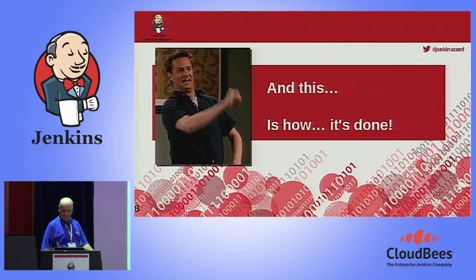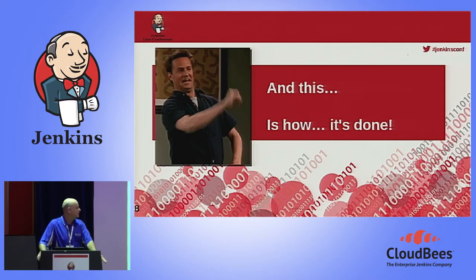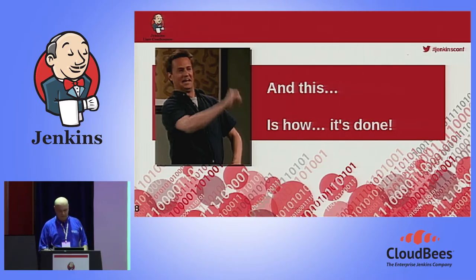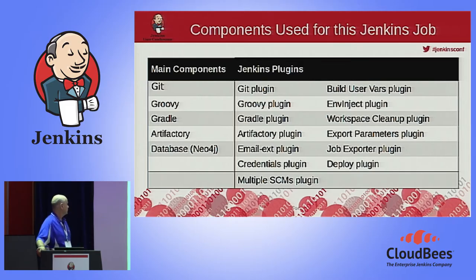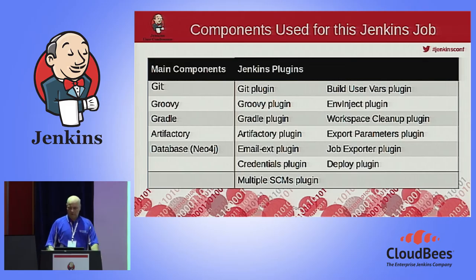This is how it's done. I know when the punchlines are coming from coding late nights on the couch watching reruns — I just look up, laugh, and go back to coding. For this particular test, the components I'm using are Git, Groovy, Gradle, Artifactory, and their associated Jenkins plugins. I'm also using Neo4j as the database, along with several user plugins — the important one being the email ext plugin, because that's what formats and delivers our email.